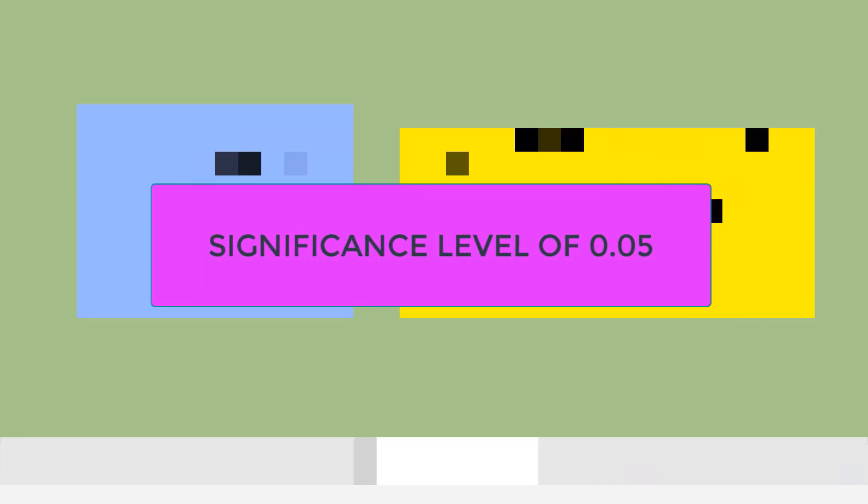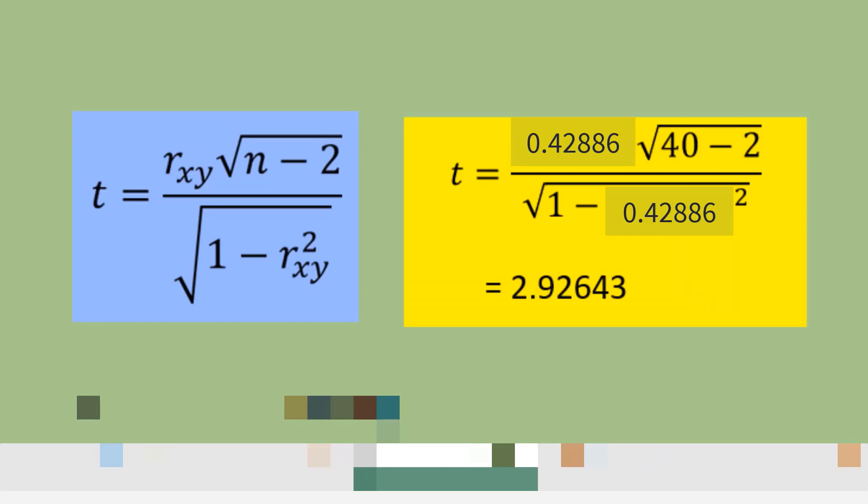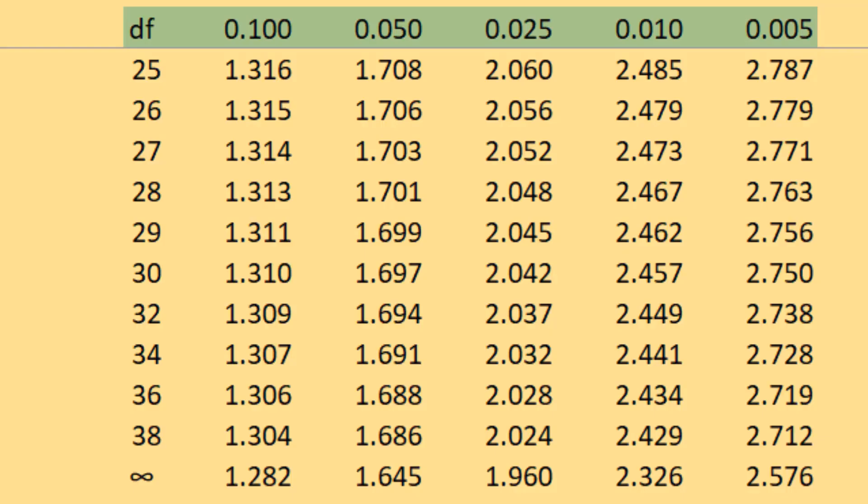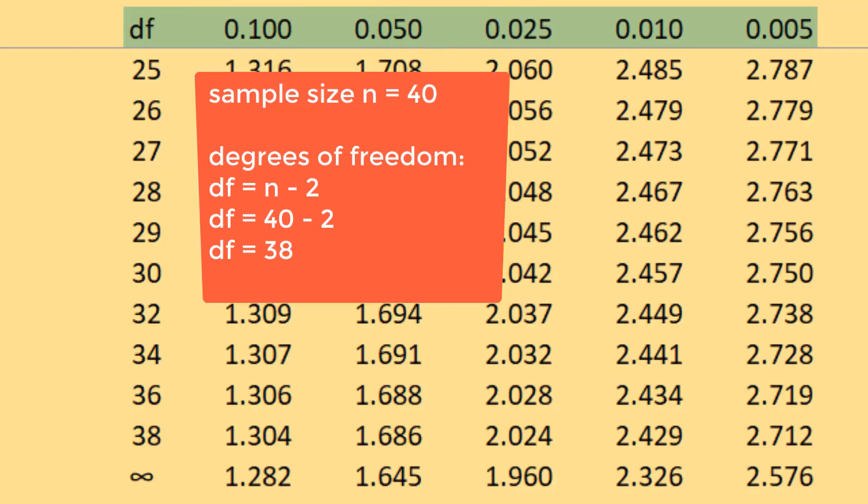We will use a significance level of 0.05. Our t-value will be the sample correlation coefficient of 0.42886 times square root of sample size n of 40 companies minus 2, divided by square root of 1 minus the square of sample correlation coefficient 0.42886, which equals 2.92643. The degrees of freedom is 38, computed as sample size of 40 minus 2.